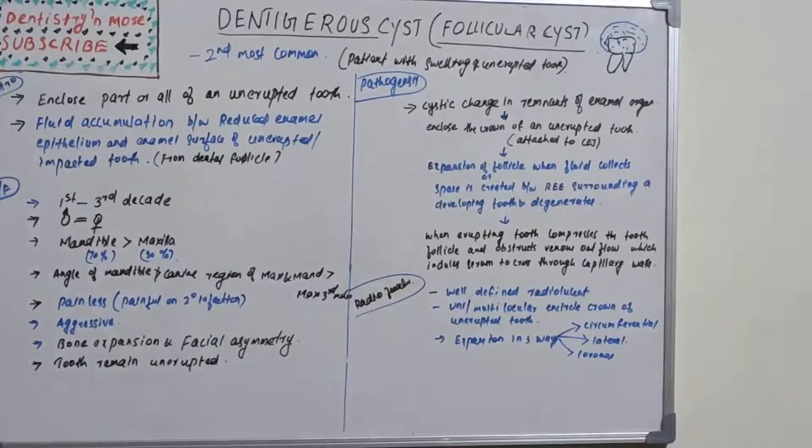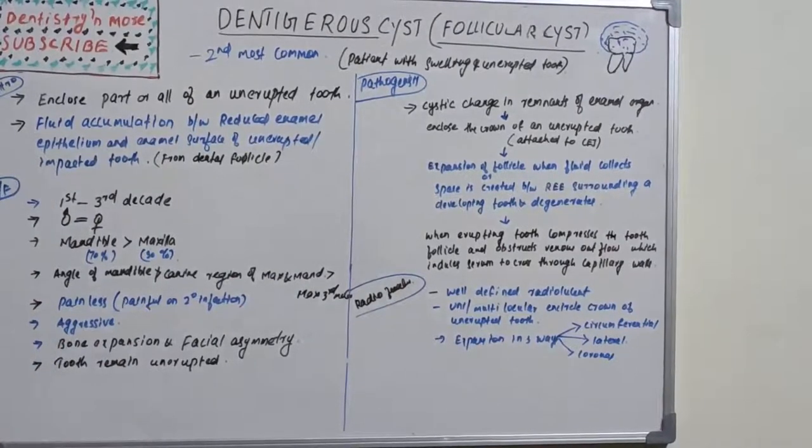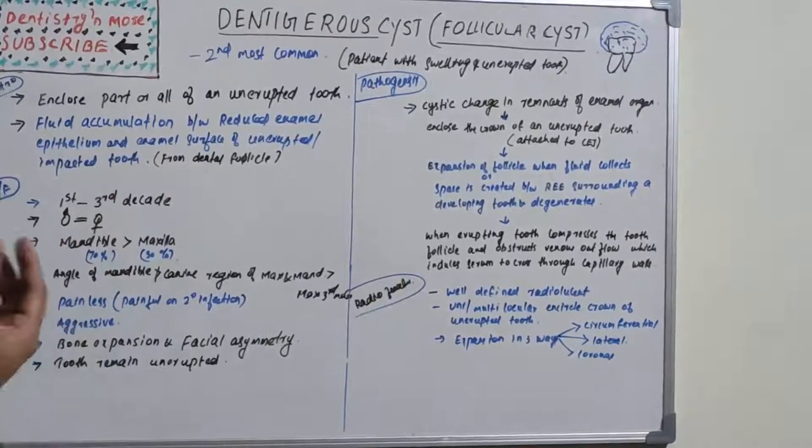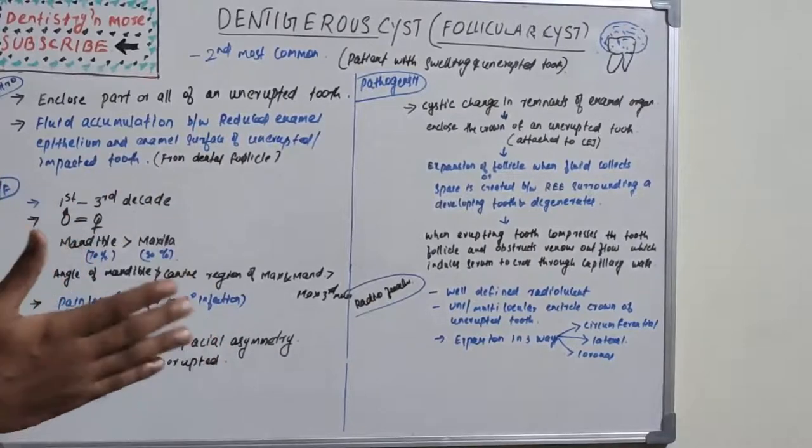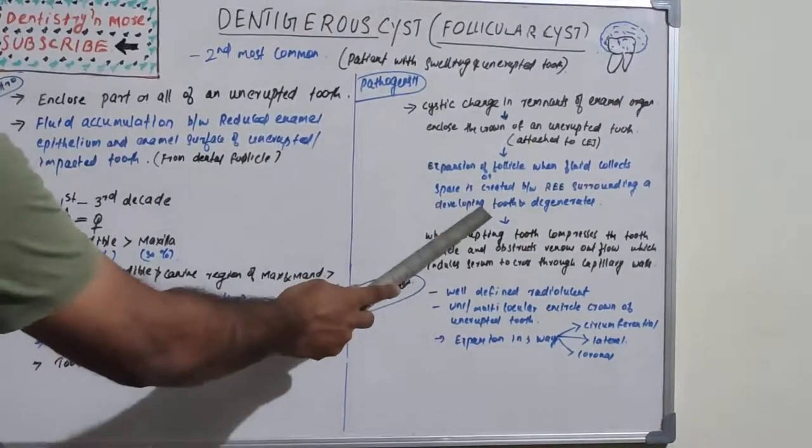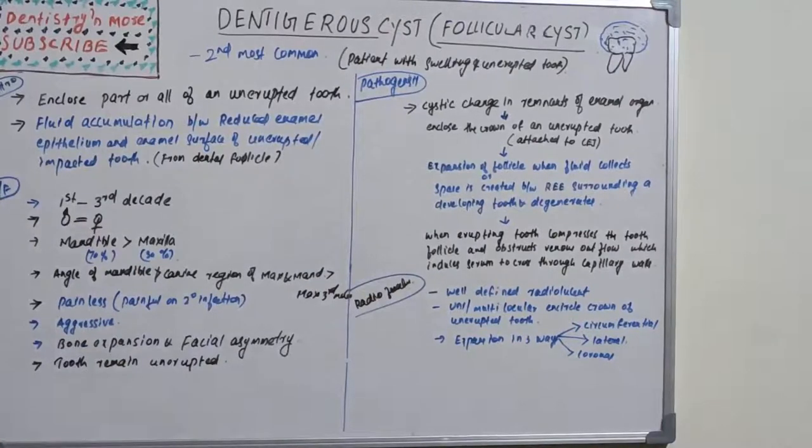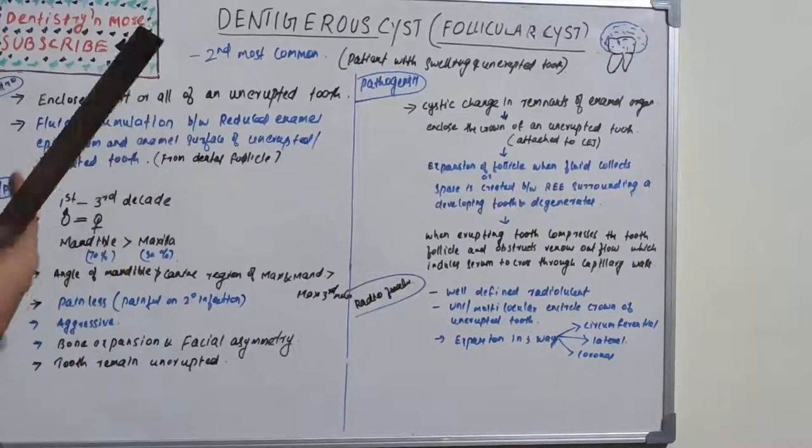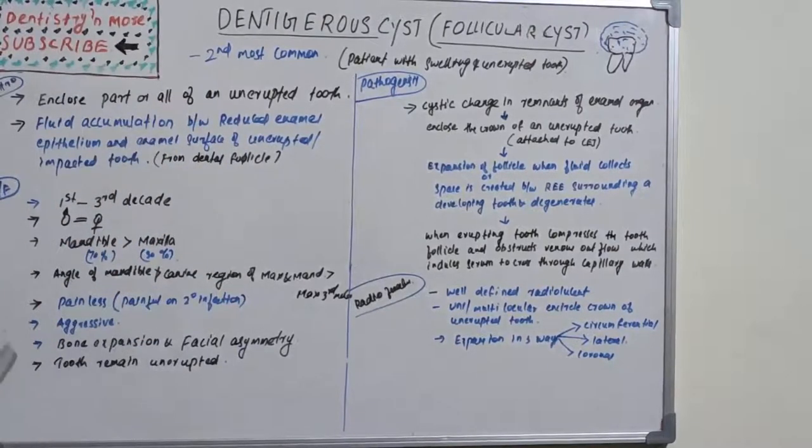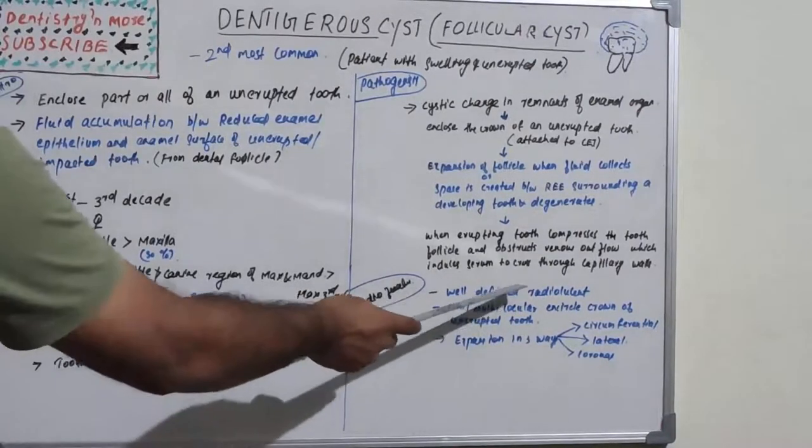It's a simple process. As the tooth erupts into the oral cavity, the reduced enamel epithelium should move away and the tooth erupts. But here, the tooth with reduced enamel epithelium is not moving away. Collection of fluid happens between this reduced enamel epithelium and the developing tooth. There will be expansion of this follicle, fluid collects in this space, and later cystic changes occur, becoming a proper cyst.